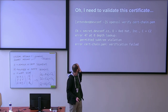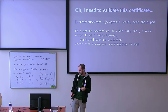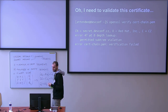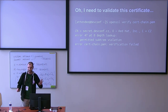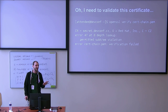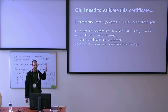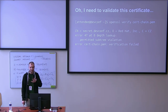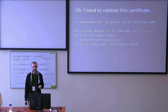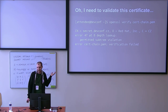You see the details of the certificate and it clearly states that error 47 happened at depth zero of the lookup and that a permitted subtree is violated — whatever that means. I know some of you in the room are perfectly aware of what this means. But I dare say there are people among you who have no idea what kind of subtree is there and why it's permitted but been violated. But it's permitted, so it's okay, isn't it?